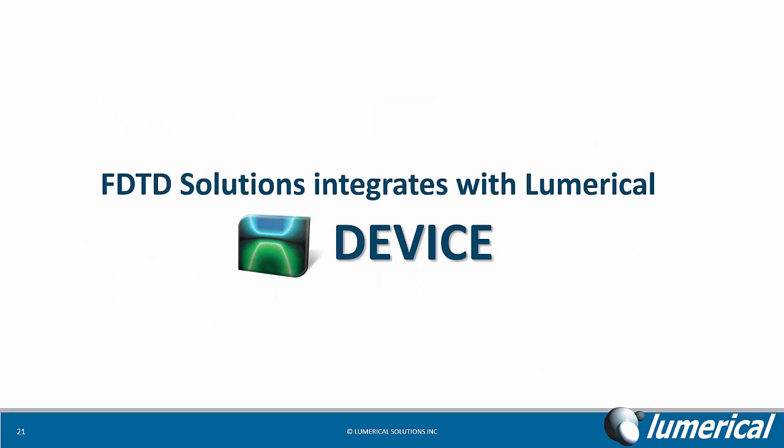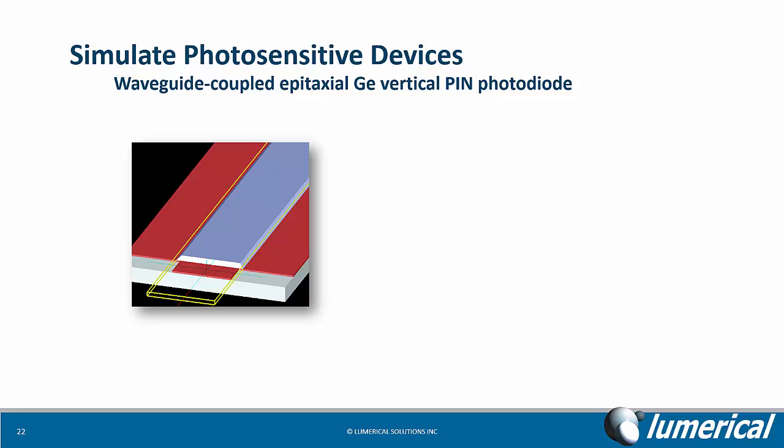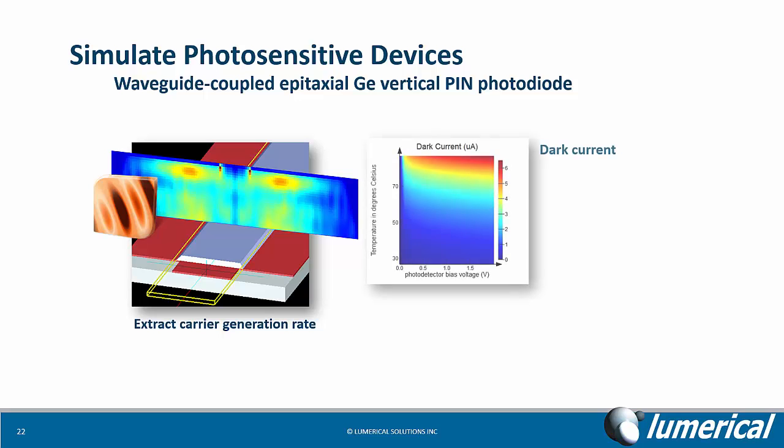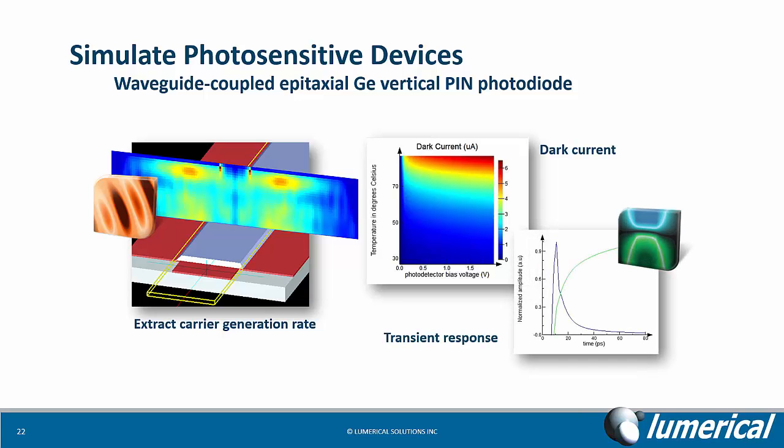FDTD Solutions integrates well with Lumerical Device, allowing for multi-physics simulations of optoelectronic and semiconductor devices. For example, to simulate photosensitive devices like the photodiode shown below, we can start with the optical simulation in FDTD Solutions, and we can extract the carrier generation rate. Device's charge transport solver can be used independently to simulate the dark current characteristic of the component, but we can also use the generation rate from the optical simulation as a source, and the transient response under illumination can also be determined.